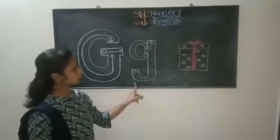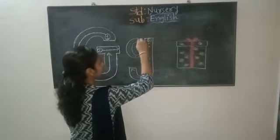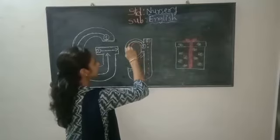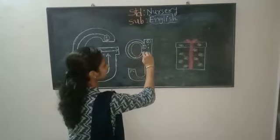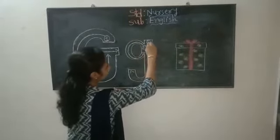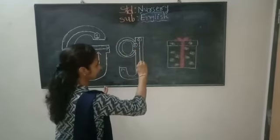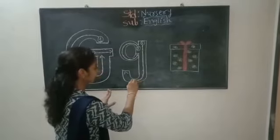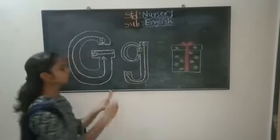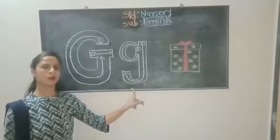Now, how to write Baby G for gift? Look here. Join the dots. Slowly, slowly make it a half circle. Then join the dots. Make it a standing line. Then here is a small curve.